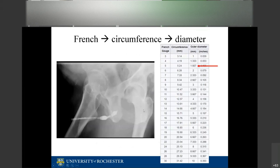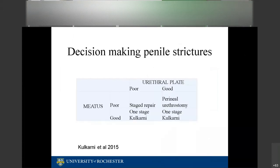To illustrate: one patient had a panurethral stricture where the urethra was 1.7 mm at its narrowest — approximately 5 French in circumference. The goal was to bring that to at least 25-30 French. That required adding about 20 mm to the circumference, meaning the graft needed to be at least 2 to 2.5 centimeters wide.